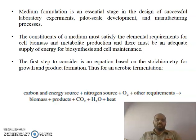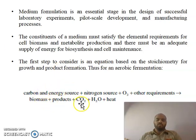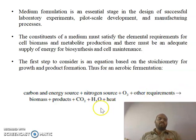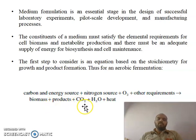For aerobic fermentation, the equation requires a carbon and energy source, along with a nitrogen source, oxygen, and other requirements such as minerals and vitamins. These lead to the production of biomass and other products, plus carbon dioxide, water, and heat as byproducts.